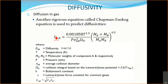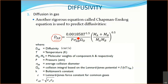In our previous class we looked at the Chapman-Enskog equation and discussed the value of the diffusion coefficient. When using this equation, you must make sure all values have the correct units. For example, T must be in Kelvin; MA and MB are molecular weights that cancel each other out; pressure must be in ATM. If you put all values in the correct units, you will get the value of DAB, your diffusion coefficient, with units of cm² per second.